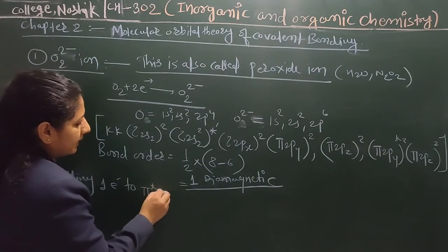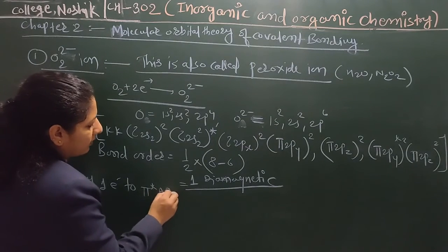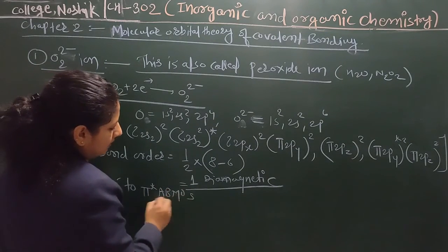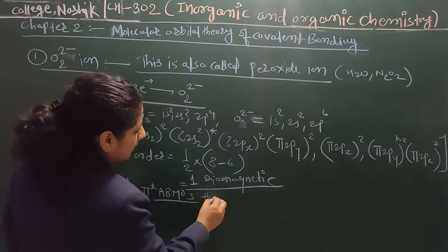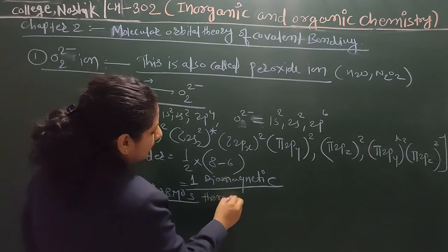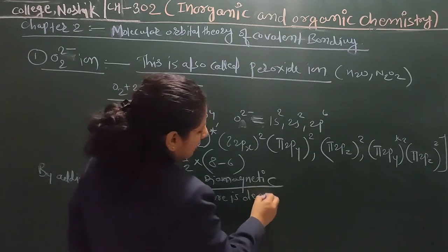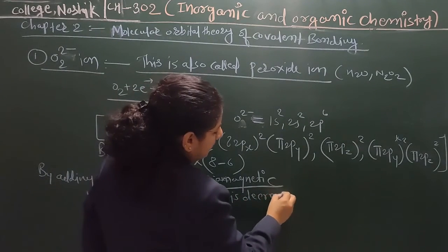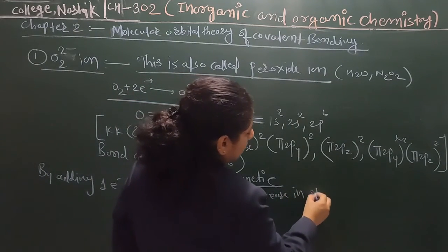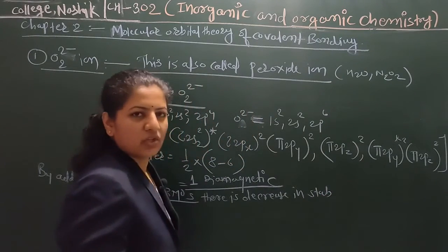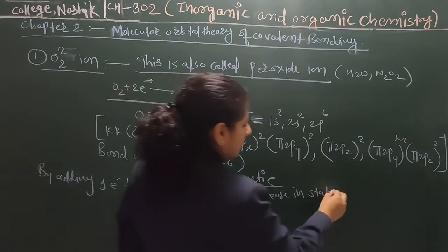By adding electrons into pi-star anti-bonding molecular orbitals, there is a decrease in stabilization energy due to decreasing bond energy.